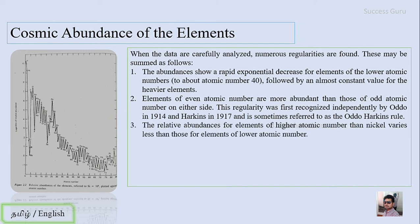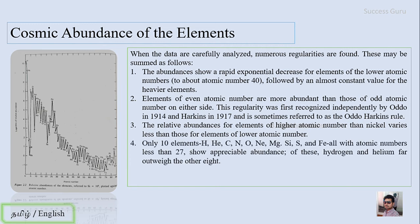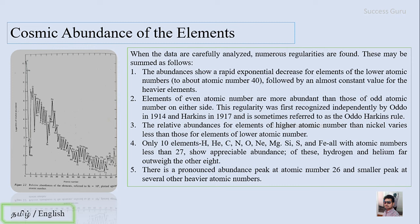The third observation is that the relative abundance of elements with atomic numbers higher than nickel varies less than those of elements with lower atomic numbers. The fourth observation is that hydrogen, helium, carbon, nitrogen, oxygen, magnesium, silicon, sulfur, and iron are the most abundant elements. There is a pronounced abundance peak at atomic number 26 (iron), and smaller peaks at several other heavier atomic numbers.